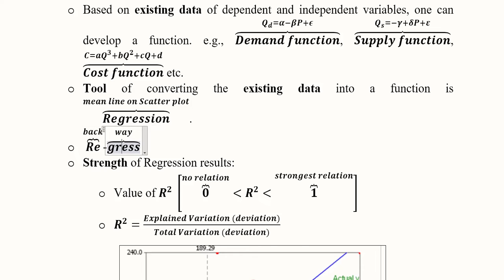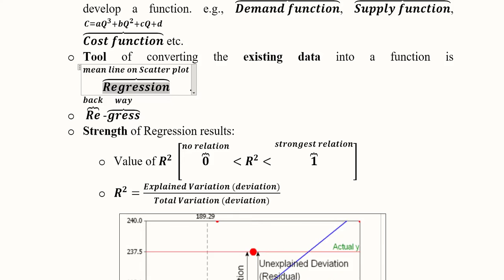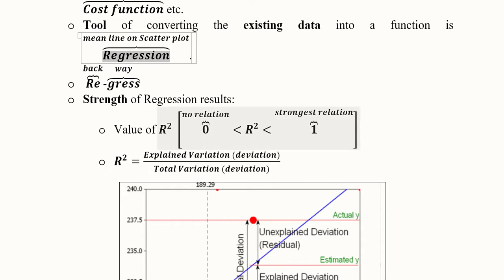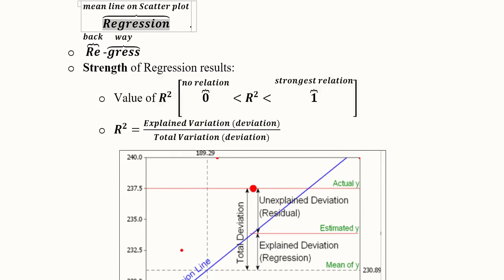We use existing data as the basis to look ahead and develop some sort of relationship. To judge the strength of the regression outcome, there is an indicator known as R-square. R-square has a range of values between 0 and 1.